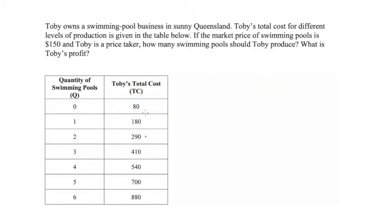Here's our question. We have Toby who owns a swimming pool business in Queensland. Toby's total cost of producing swimming pools for various levels of production is given in this table. For instance, if Toby makes no swimming pools his total cost will be 80, if he makes one his total cost will be 180, and if he makes four his total cost will be 540. We're asked: if the market price is $150 and Toby is a price taker, how many swimming pools should Toby produce, and what is Toby's profit?